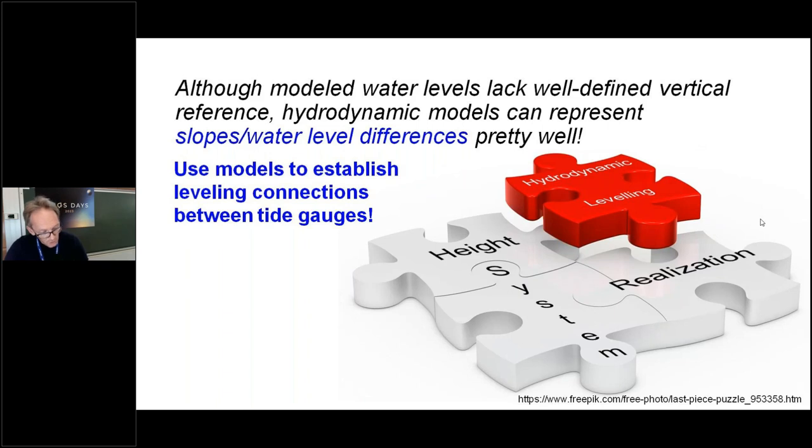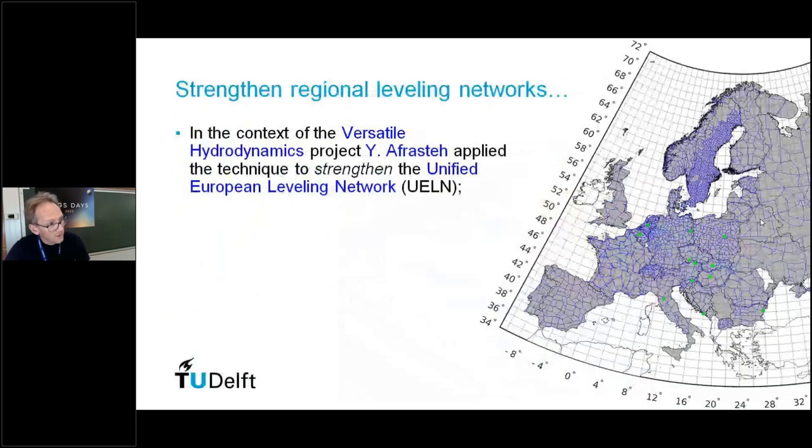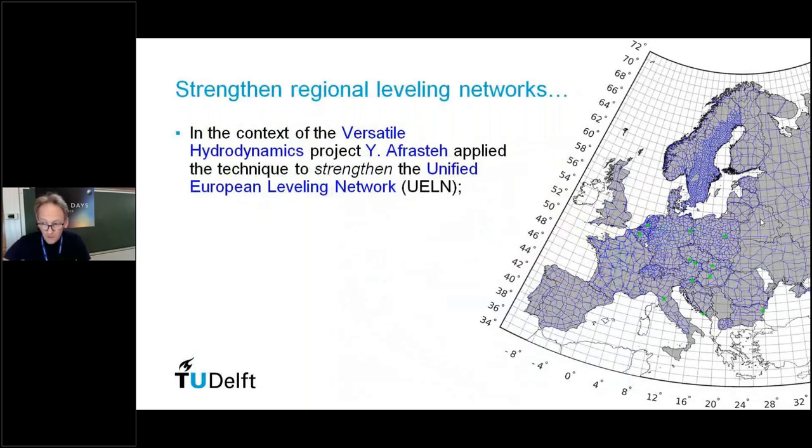They have a problem in representing absolute water levels, but in terms of water level differences or slopes in water levels, they do a pretty good job. You can use these models to establish leveling connections between tide gauges, which in turn can be used to transfer heights to an offshore platform or to a tide gauge on an island. You can establish leveling connections between tide gauges and combine this with an existing leveling network.